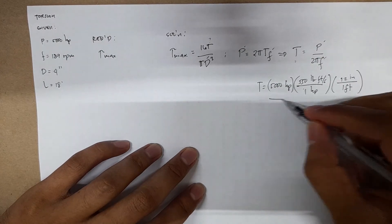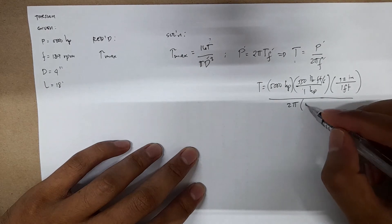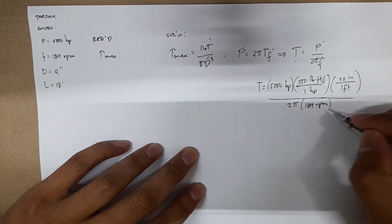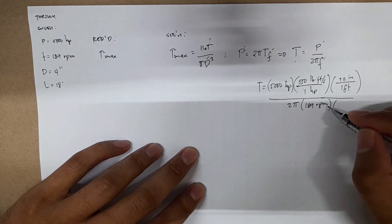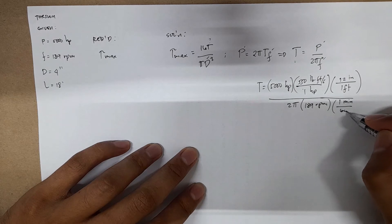You have 2 pi times 189 RPM. Since this is in the denominator, we have 1 minute equals 60 seconds.